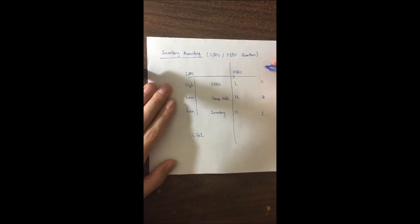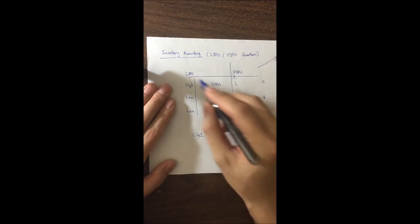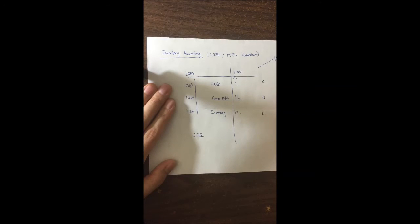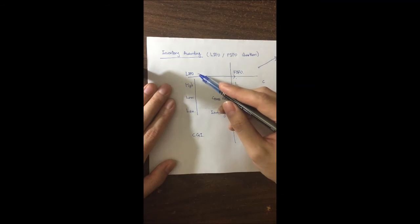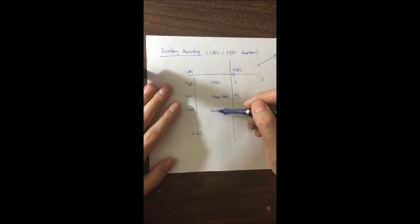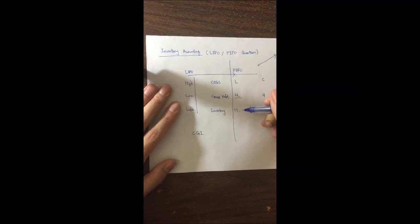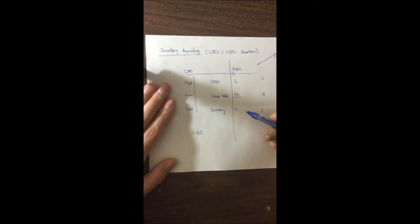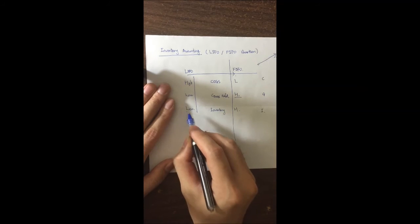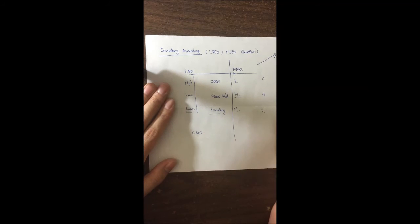For example: if the question says prices are going up and your firm is using FIFO, what happened to gross profit on the financial statement at year end? You know it's going to be higher than if using LIFO. Similarly, if prices are going up due to inflation and your firm is using LIFO, is the inventory on the balance sheet — on the asset side — higher, lower, or the same compared to FIFO? You look at your chart: LIFO inventory is Low. This is a very quick way to get easy points on the exam.